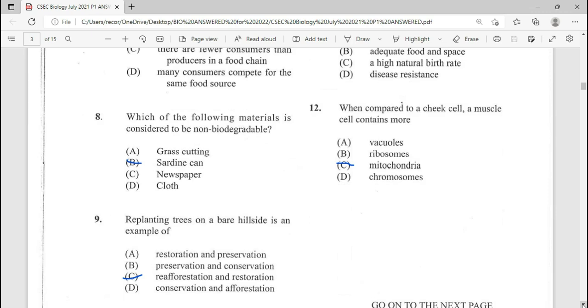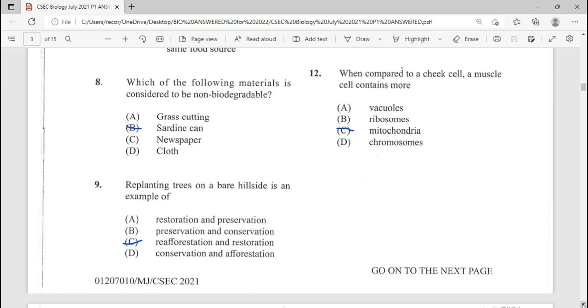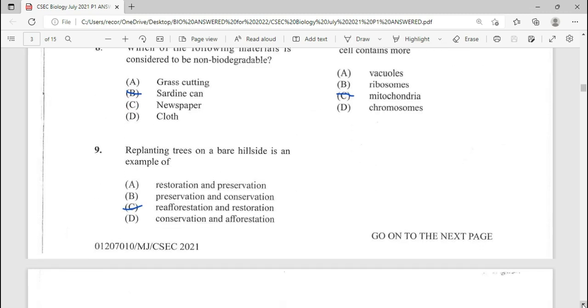Number eight, which of the following material is considered to be non-biodegradable? That's going to be B and these are repeated questions. Number nine, replanting trees on a bare hillside is an example of, answer there, C, reforestation and restoration.